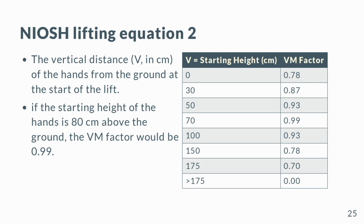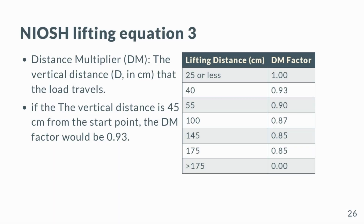The Vertical Multiplier (Vm): if the hands are 80 cm above the ground, the Vm factor would be 0.99. This means that the recommended weight limit for the lifting task would be adjusted downwards by a factor of 0.99 in the NIOSH Lifting Equation. The Distance Multiplier (Dm) is the vertical distance D in cm that the load travels. If the vertical distance is 45 cm from the start point, the Dm factor would be 0.93.